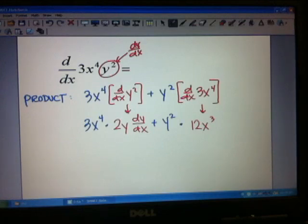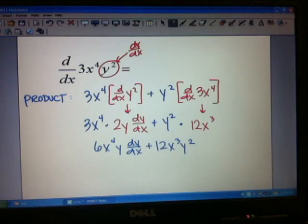My multiplication I can combine, I can essentially squish that all together. So I would have 6x to the 4th y dy/dx plus 12x cubed y squared. And as far as the question that it's asking, this derivative, this is our answer.